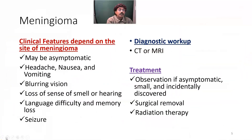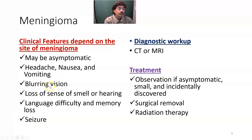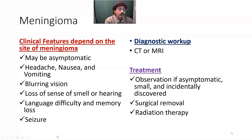Meningioma clinical features depend on the site of the meningioma. It may be asymptomatic for many years and diagnosed incidentally. Symptoms include headache, nausea, vomiting, blurring of vision, loss of sense of smell or hearing, and language difficulty — because it may occur over the motor speech area of Broca or the Wernicke area. Memory loss may be present due to damage to the brain. Seizure or convulsion is a common feature of meningioma, usually appearing in the late stage but possibly occurring earlier depending on which part of the brain is being compressed.